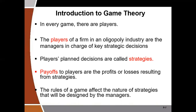Bringing it into the context of economics, specifically in the context of firms in an oligopoly industry, the players of the firm are the managers in charge of key strategic decisions — decisions that affect the outcome of the firm. These include decisions affecting profit, market share, and product quality. So managers in charge of key decisions that influence key outcomes of the firm are the people we refer to as the players.